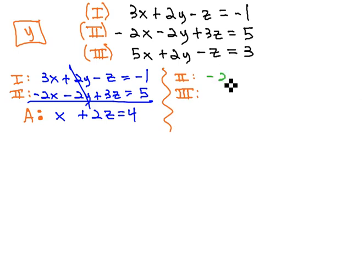Equation 2 was negative 2x minus 2y plus 3z equals 5, and equation 3 is 5x plus 2y minus z equals 3.